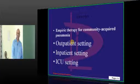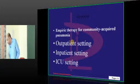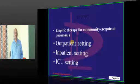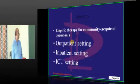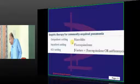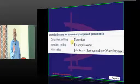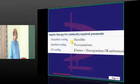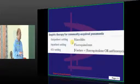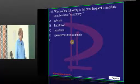Community-acquired pneumonia is the favorite question of the examiner. Outpatient setting: macrolide. One big clap for all the students who answered macrolide. Inpatient setting: fluoroquinolone. ICU setting: beta-lactam plus fluoroquinolone or erythromycin is what you have to basically remember.